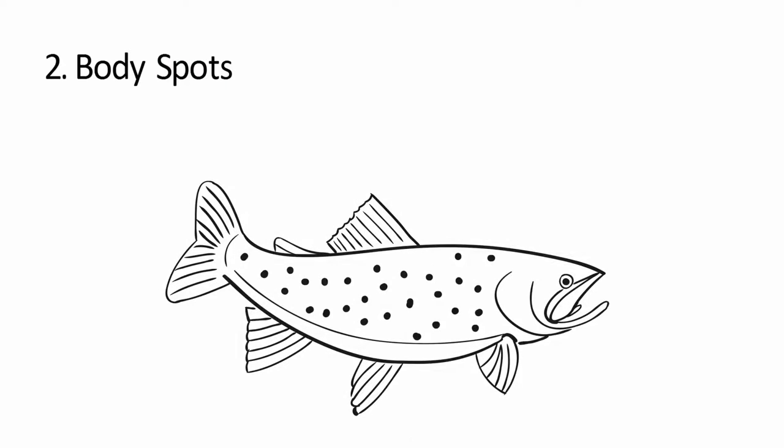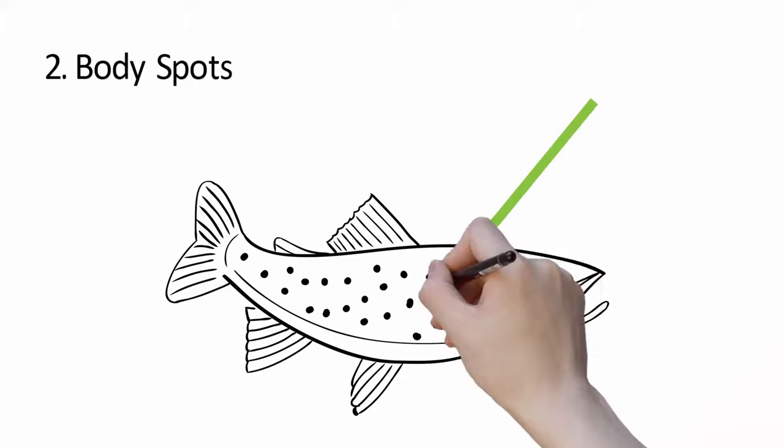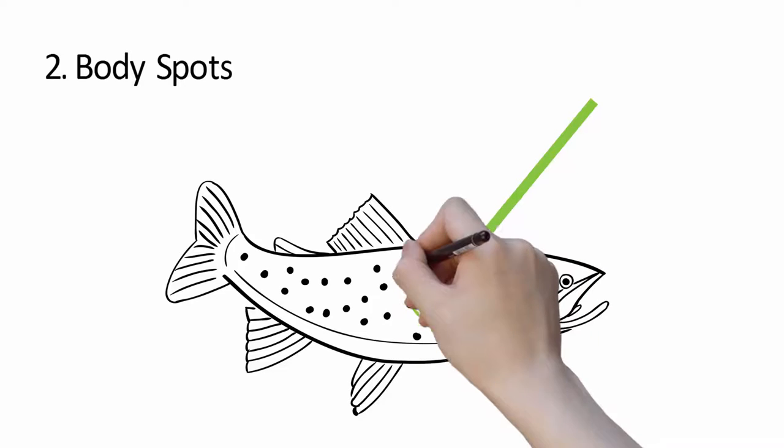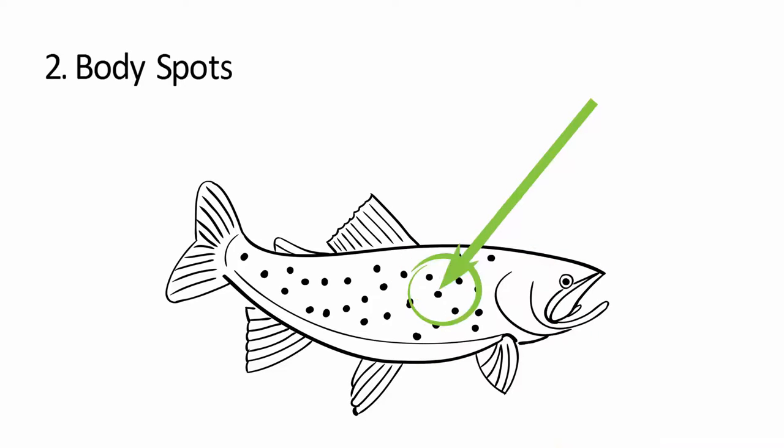Next, body spots. Look at the size, distribution, and color of spots on the back and sides. Trout have dark spots and char have light spots.